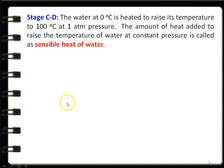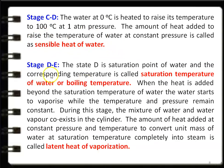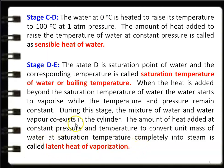Stage C–D: water at 0°C is heated to raise the temperature to 100°C at 1 atmospheric pressure. The heat added to raise the temperature of water at constant pressure is called sensible heat of water. Stage D–E: point D is the saturation point of water; the corresponding temperature is called the saturation temperature or boiling temperature. When heat is added beyond the saturation temperature, water starts to vaporize while temperature and pressure remain constant — the mixture of water and water vapour co-exists. The heat added at constant pressure and temperature to convert unit mass of water at saturation temperature completely into steam is called latent heat of vaporization.